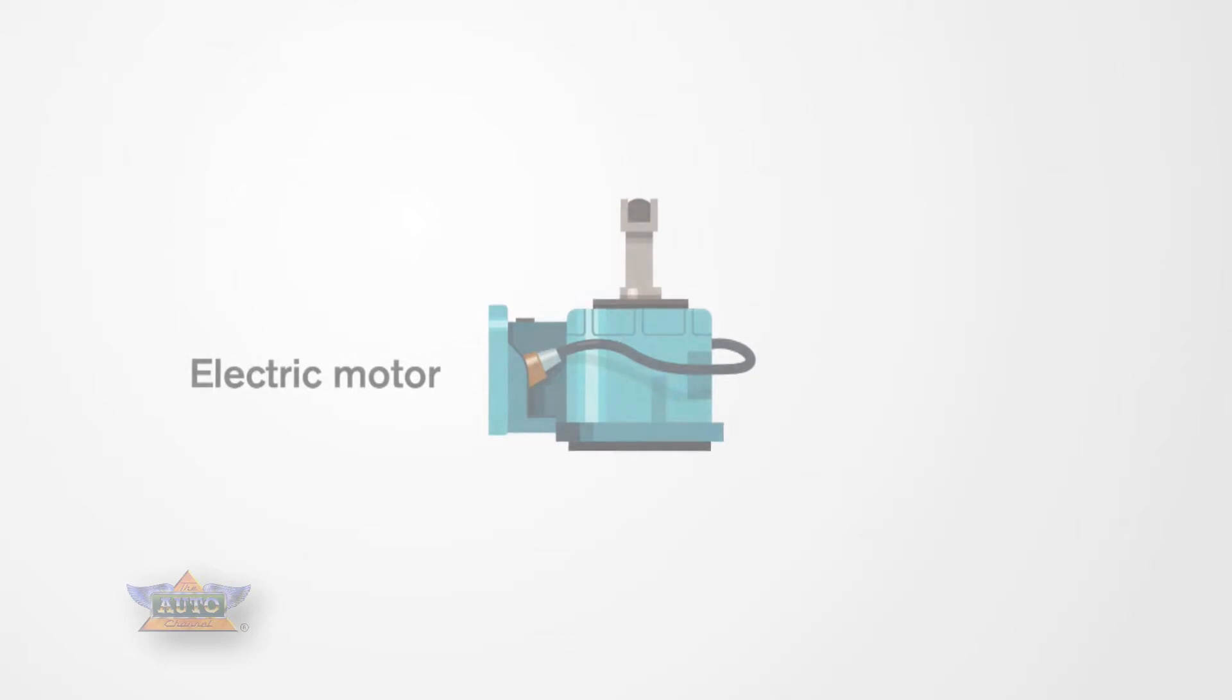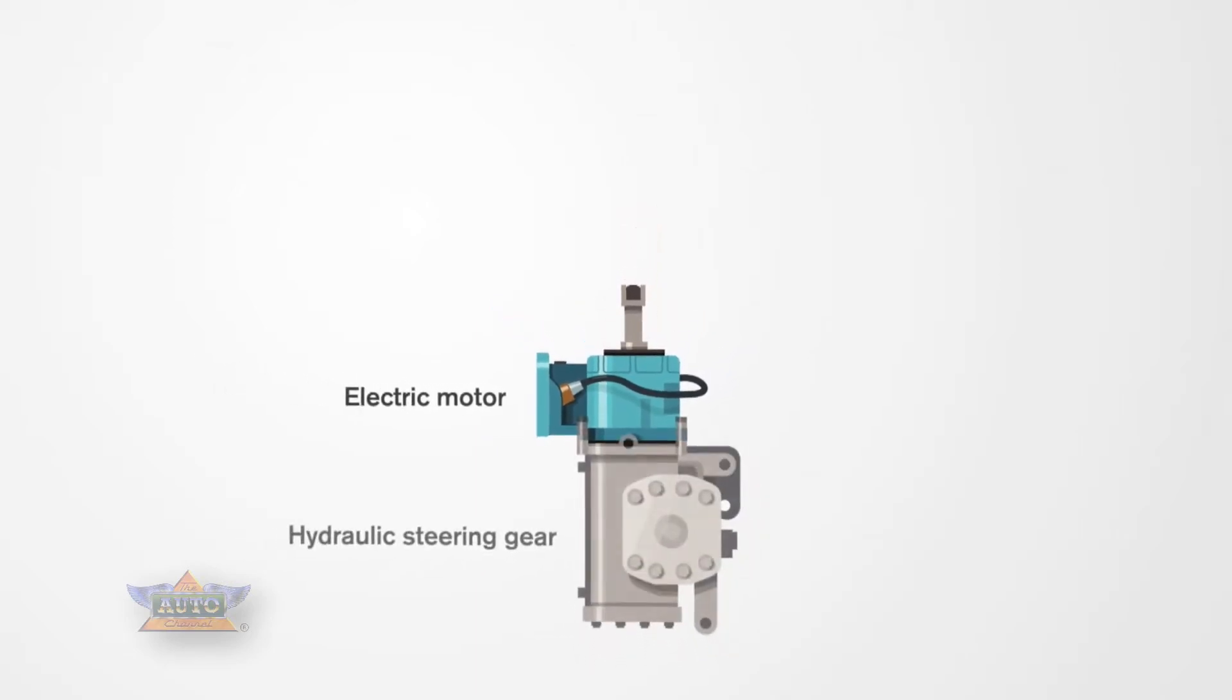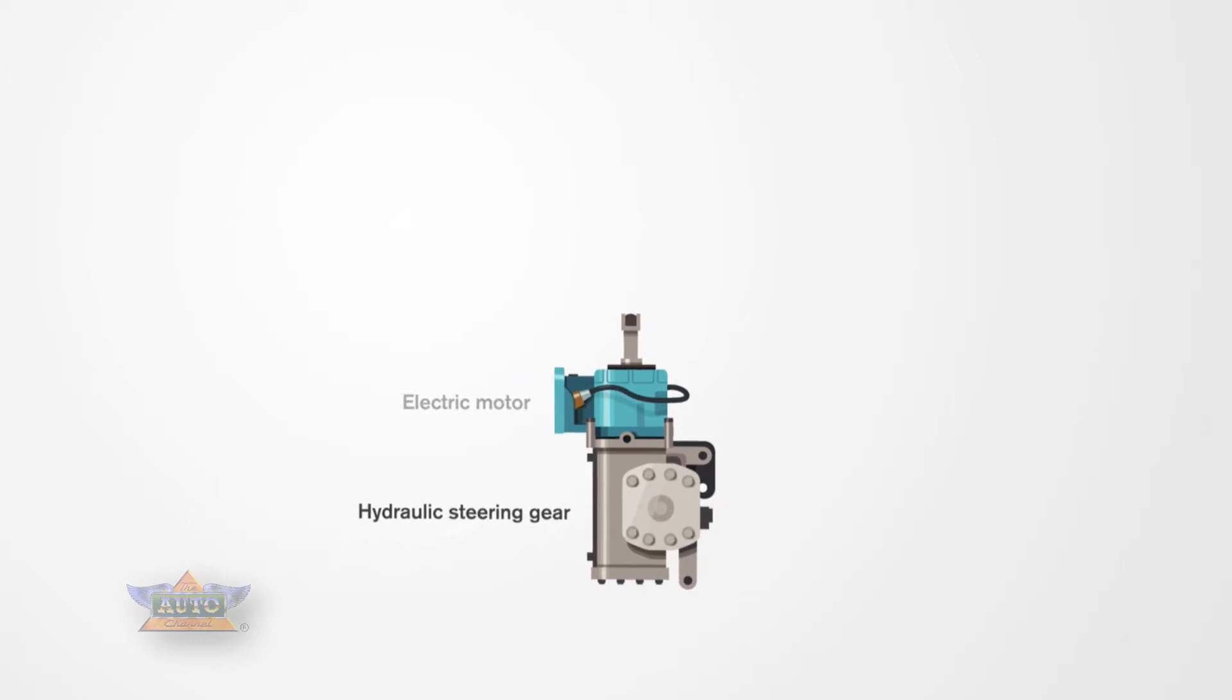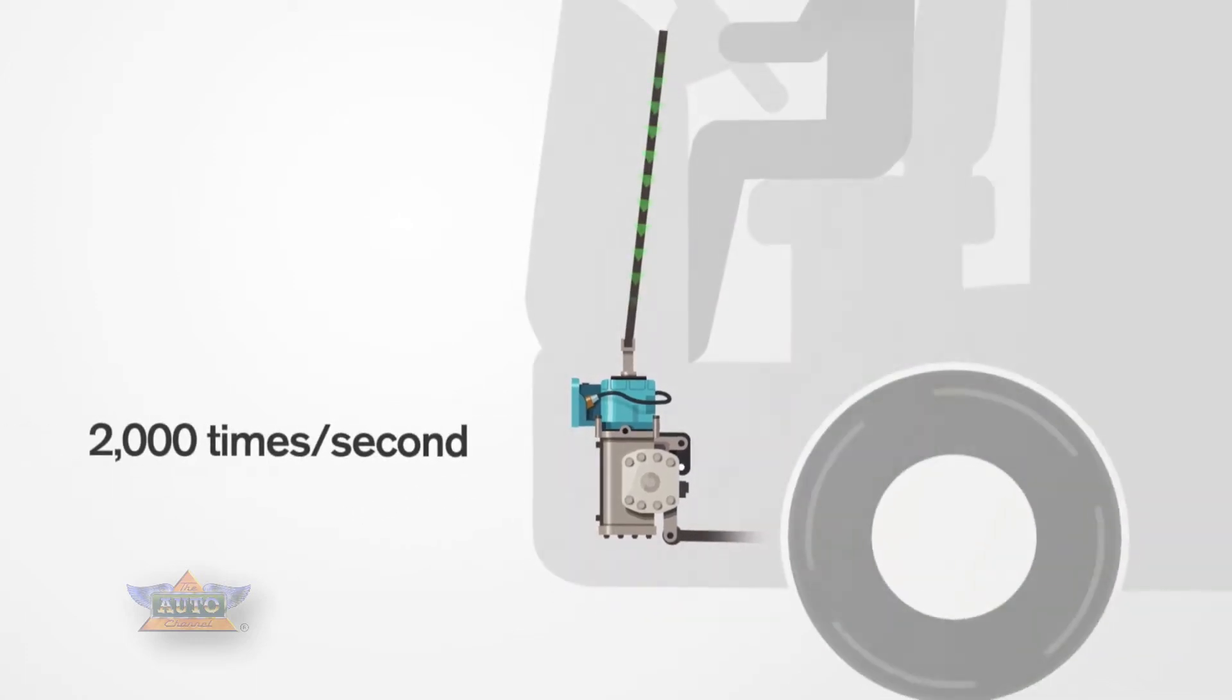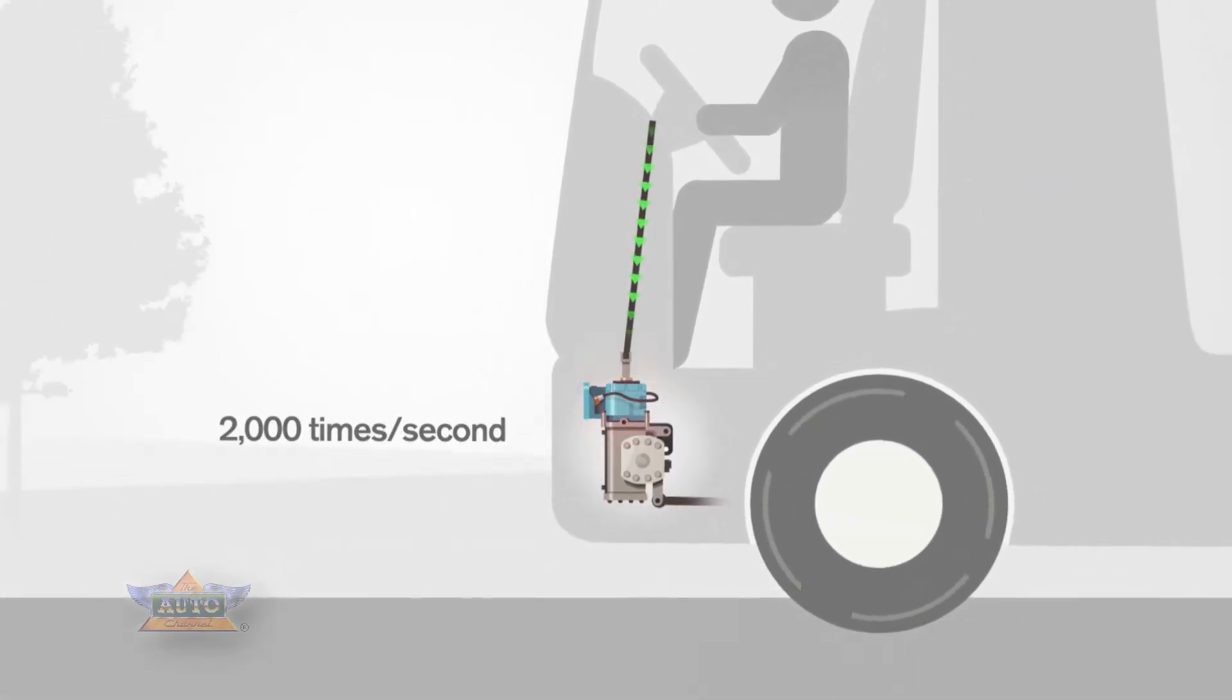Volvo Dynamic Steering works through a precisely controlled electric motor, which is mounted on top of the hydraulic steering gear. The motor is controlled 2000 times per second based on the input from the driver and the onboard sensors.